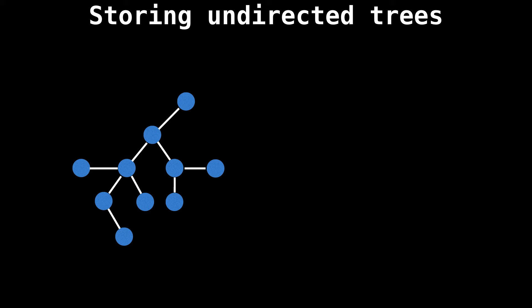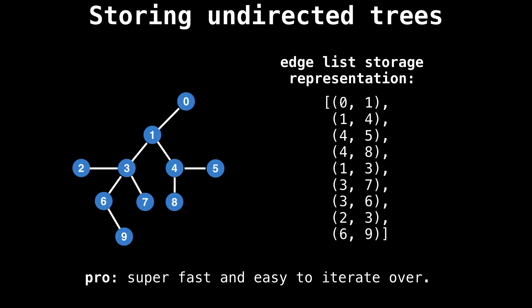All right, now we need to talk about how we actually store and represent undirected trees on a computer. First, you should label all the nodes of your tree by indexing them from zero to n non-inclusive, like the tree on the left of the slide. A very simple way to store a tree is as an edge list, which is simply a list of undirected edges indicating which two nodes have an edge between them. The great thing about this representation is that it's super fast to iterate over and quite cheap to store.